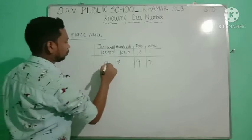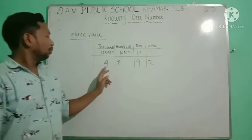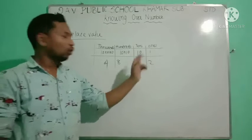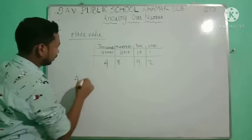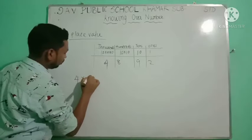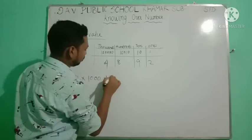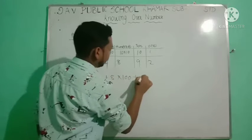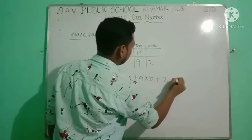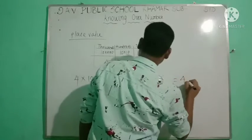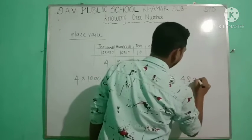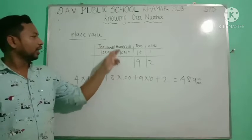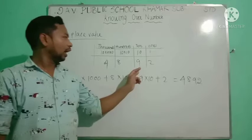For example, take the number 4892. Here, 4 is in the thousands place, 8 is in the hundreds place, 9 is in the tens place, and 2 is in the ones place. So we write it as: 4 × 1000 + 8 × 100 + 9 × 10 + 2, that is, four thousand eight hundred ninety-two.